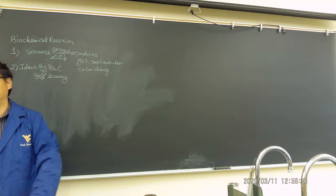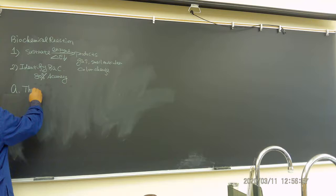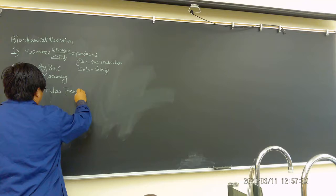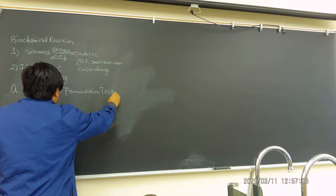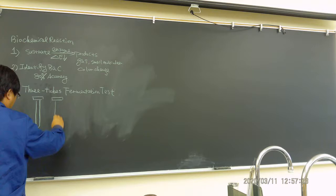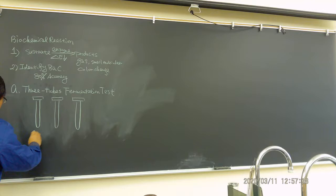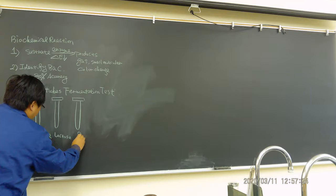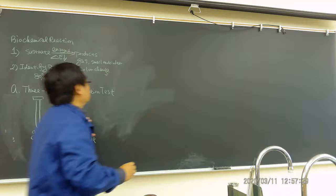The first test we're going to do is called the three-tube fermentation test. Before we discuss the test, let's talk about fermentation a little. We have three tubes representing glucose, lactose, and sucrose.